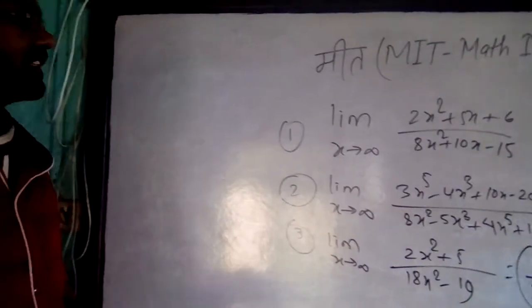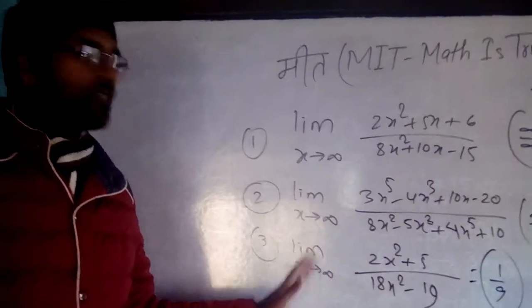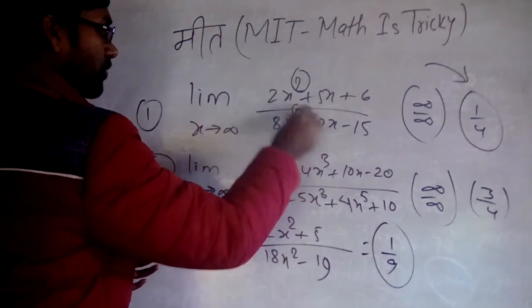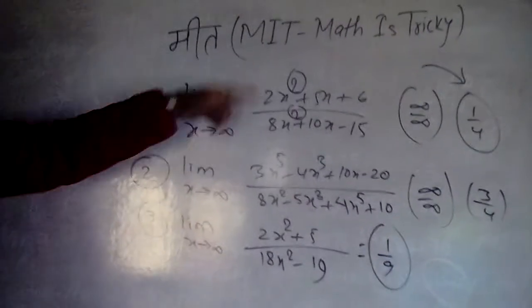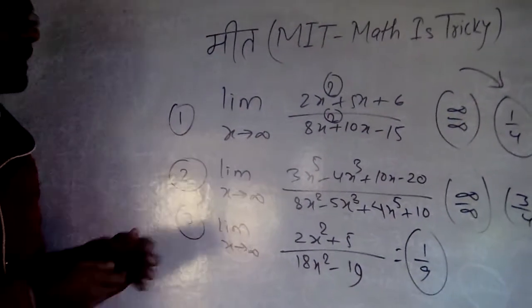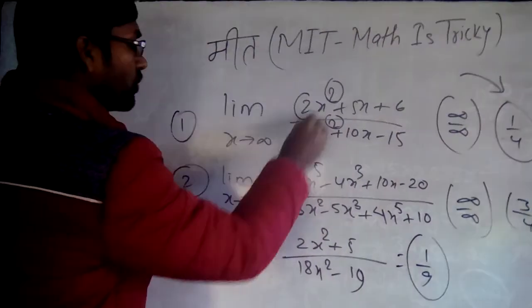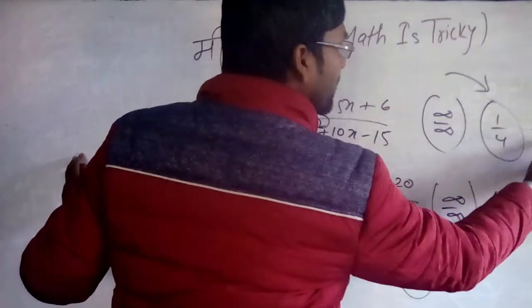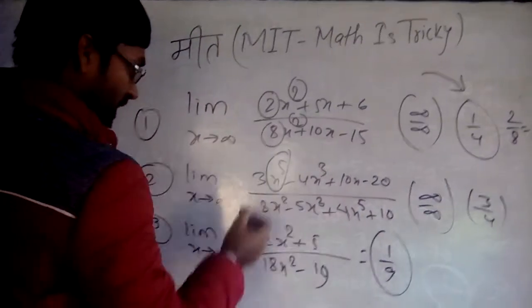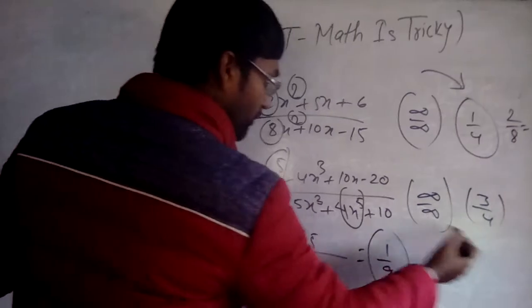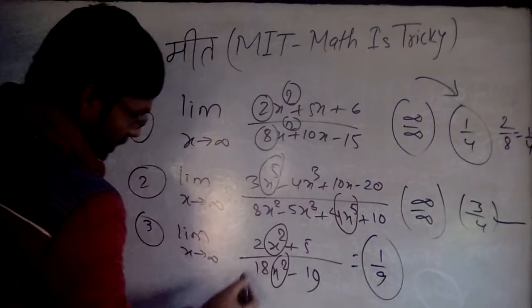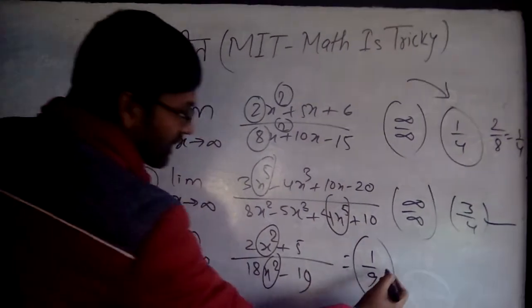See here the trick. The highest degree of this term is 2, here also 2. If the degree of numerator and denominator is the same, and it's in infinity by infinity form, the answer will be simply the ratio: 2/8 which is 1/4. Here also highest degree is x⁵, so 3/4. Here x² and x², so 2/18 which is 1/9.